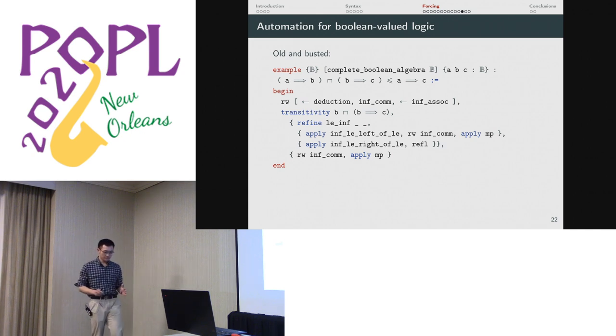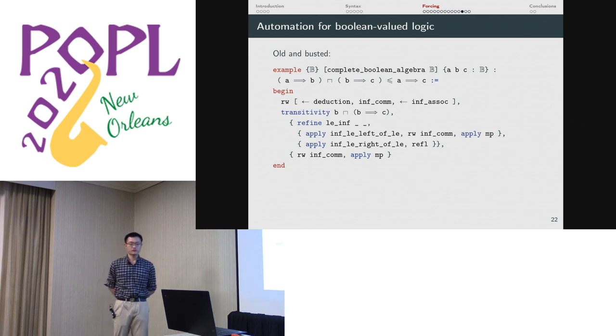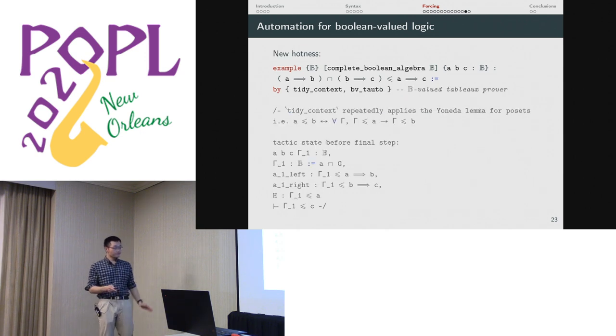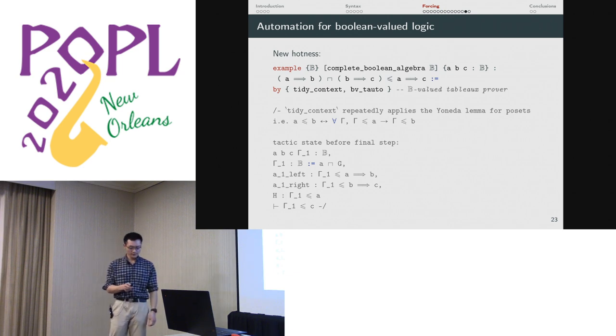One thing that we found really helpful and which was crucial for the formalization was being able to automate proofs in Boolean-valued logic. One reason why some people don't like the Boolean-valued approach is that you end up having to calculate these Boolean truth values all the time. It becomes really tedious. So one positive aspect of doing this inside of a proof assistant is that the proof assistant can handle all of the bookkeeping for you. But to do that, you have to write some automation. So if you have a goal like this, which just looks like you apply modus ponens twice, well, if you just look at this as terms in a Boolean algebra, you start rewriting and simplifying. Maybe you even have a lemma for MP. You still have to do a bunch of stuff where you rewrite by the commutativity of the infimum transitivity arguments and so on. This looks much more complicated than it has to be. But once you use the metaprogramming capabilities of Lean, you can simply write something like a Boolean-valued tableau prover and then it just takes care of it in a single line. So that was really helpful.